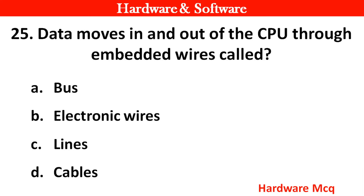Question 23: Data moves in and out of the CPU through embedded wires called... Options: A. Bus, B. Electronic wires, C. Lines, D. Cables. Right answer is option A — Bus.